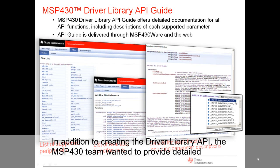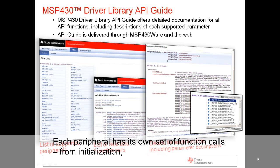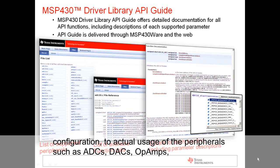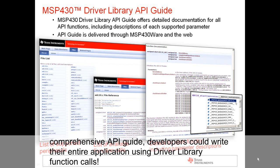In addition to creating the Driver Library API, the MSP430 team wanted to provide detailed and comprehensive documentation to make it easy for customers to begin leveraging the API. Each peripheral has its own set of functions, from initialization, configuration, to actual usage of peripherals such as ADCs, DACs, op amps, timers, serial communication modules, and more. With the help of this comprehensive API guide, developers could write their entire application using Driver Library function calls.